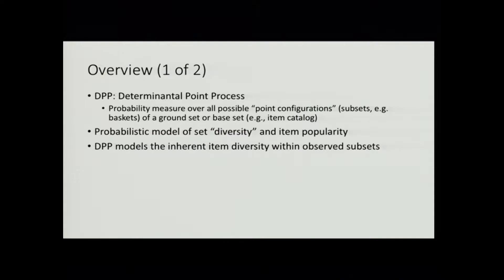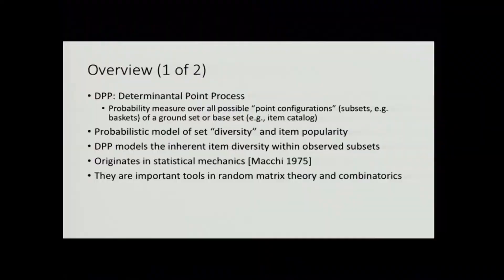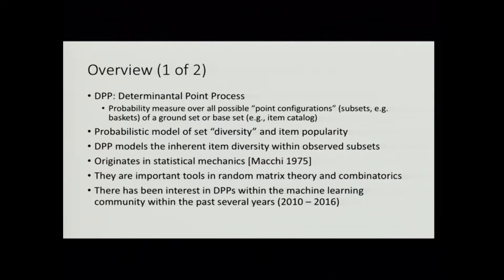We're working in the domain of shopping basket completion, so here our subsets are shopping baskets — purchased shopping baskets — and our ground set is the item catalog. The DPP is a probabilistic model of the inherent diversity within these shopping baskets that are purchased. The model originates in the statistical physics community back in the mid-70s, and also comes up in random matrix theory and combinatorics. There's also been interest in DPPs in the past six years or so in the machine learning community.